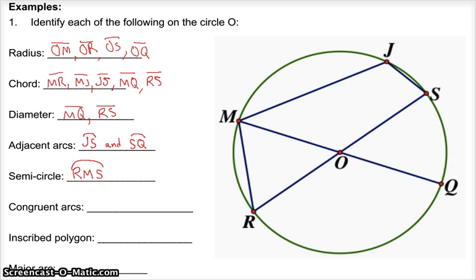Congruent arcs. I need two arcs that are cut off by the same size angle. I know these are vertical angles right here. So I know MR, the central angle at MR, is congruent to the central angle at SQ. They have the same size arc measure because they have the same central angle measure. Inscribed polygon - the only inscribed polygon I see fully closed is MRSJ, Mrs. J.